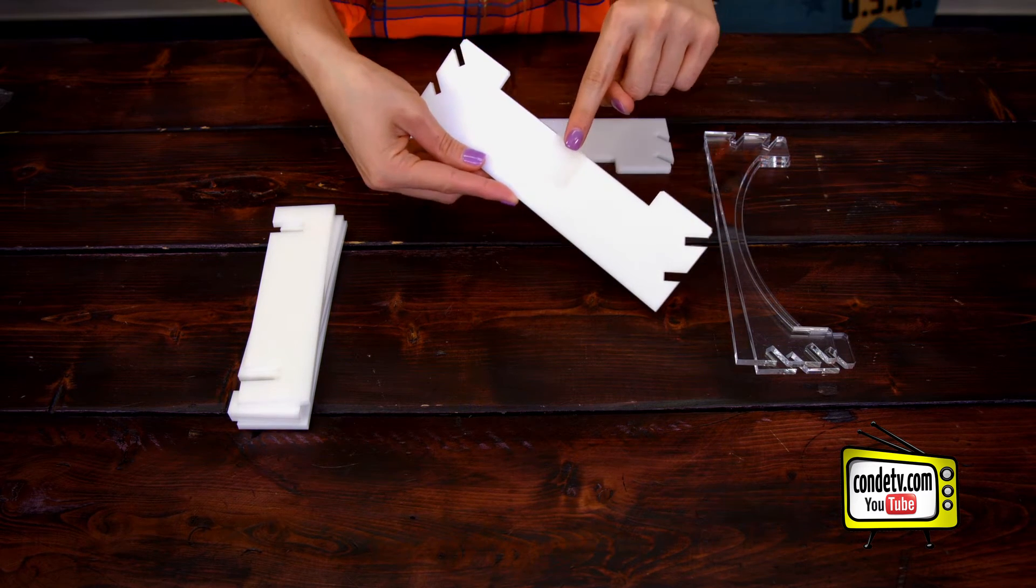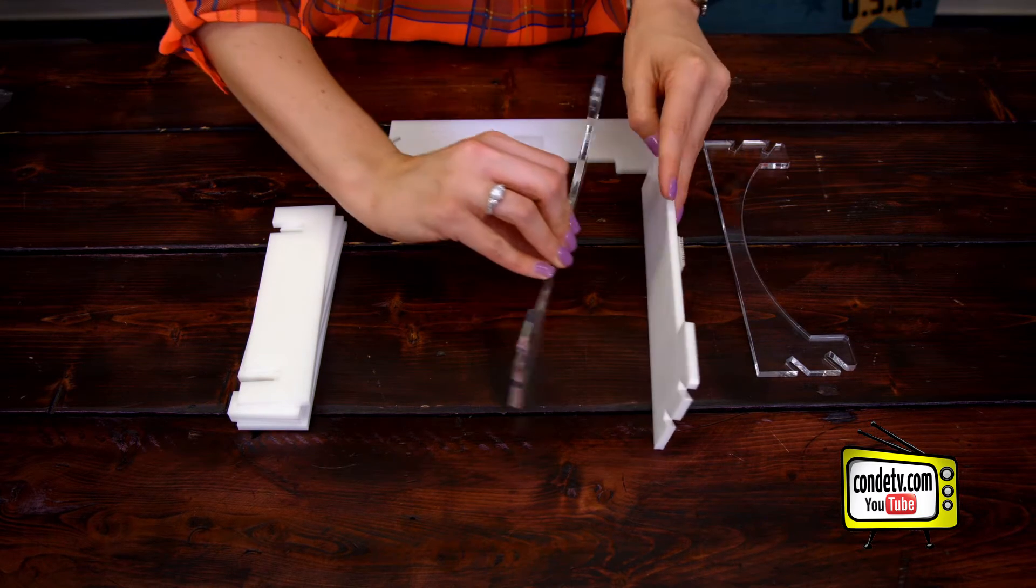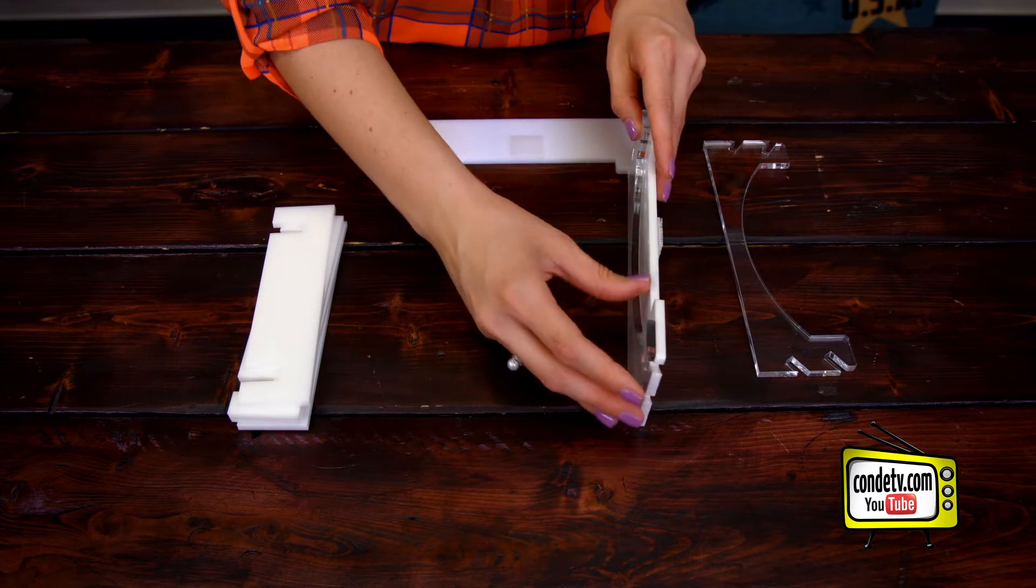You're going to take the first white piece and make sure that the tape is faced outward, and you're going to line it up with one of the clear curved side pieces.